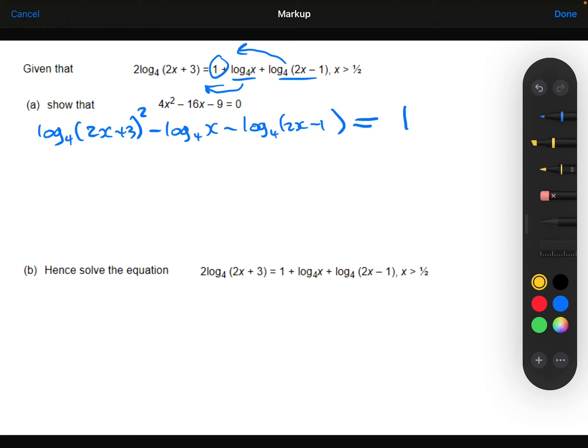Next, I'm going to use the subtraction law. So I'm going to rewrite these. Let's just focus on these first two terms to begin with. So these first two terms become log base 4 of the 2x plus 3 all squared, all divided by x.